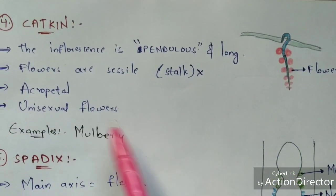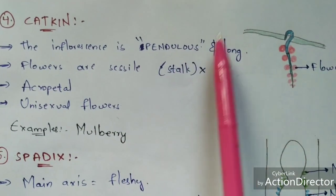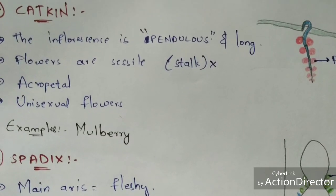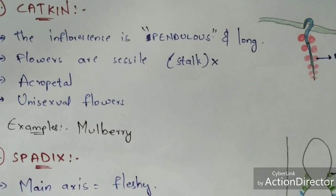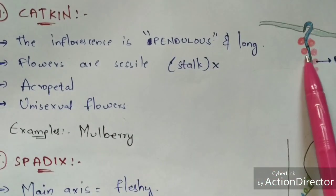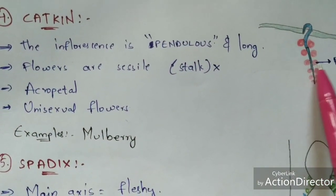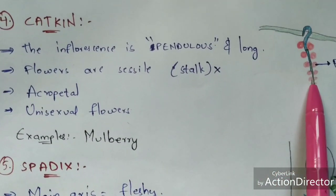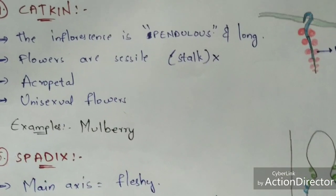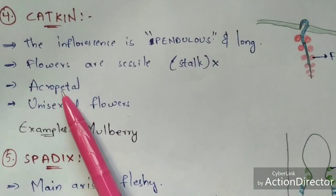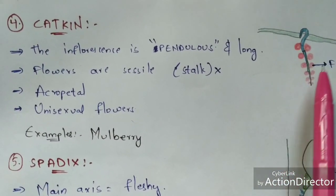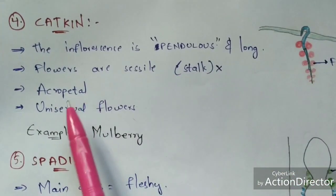Coming to the fourth type — catkin. In this type of inflorescence, the inflorescence is pendulous and long. In raceme the flowers have stalks, in spike the flowers are sessile, and in catkin the flowers are also sessile — no stalk, flowers directly attached to the main axis. It is arranged in an acropetal manner — from bottom to top the size of the flowers decreases. Catkin consists of unisexual flowers, and examples include mulberry.